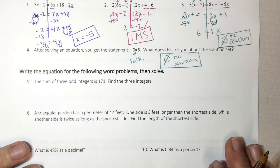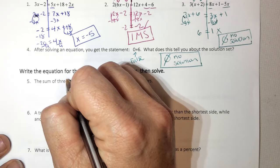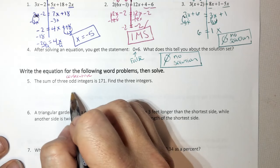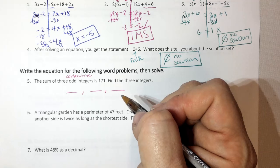Look at number 5. It says the sum of 3 consecutive odd integers is 171. So I know I have 3 unknown consecutive odd numbers. And I know odd numbers are 2 apart.